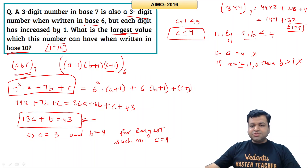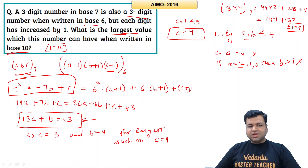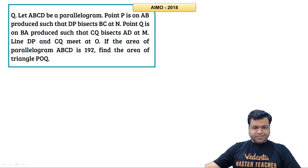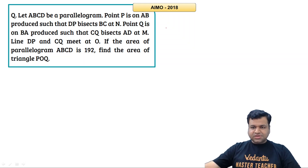As you can see, this is a decent question from number theory. Now let's proceed to the next question. ABCD is a parallelogram. Point P is on AB produced such that DP bisects — let's draw the diagram.